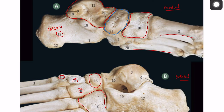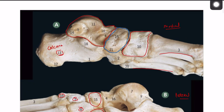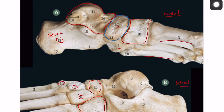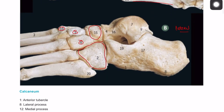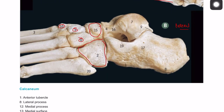Number 13 is the calcaneum, the large unlabeled bone is the talus, number 15 is the navicular bone, number 2 is the cuboid, and the cuneiforms are numbers 10, 5, and 6, followed by the metatarsals.